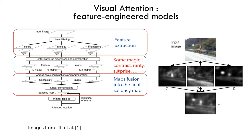Once you have those feature maps, you combine them into conspicuity maps — one conspicuity map for colors, intensity, and orientation. You have the initial image, three conspicuity maps for colors, intensity, and orientations, and then they are fused together into the final saliency map, which will summarize all the interesting areas of the initial image.